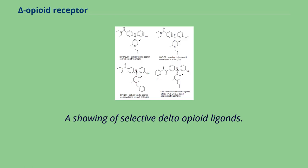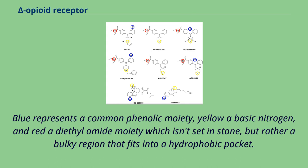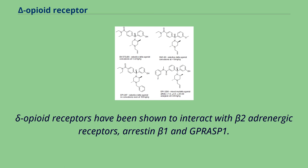A showing of selective Delta opioid ligands: blue represents a common phenolic moiety, yellow a basic nitrogen, and red a diphenyl amide moiety — which isn't set in stone, but rather a bulky region that fits into a hydrophobic pocket. Delta opioid receptors have been shown to interact with Beta-2 adrenergic receptors, Arrestin-Beta-1, and CRASP-1.